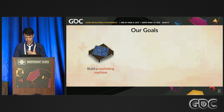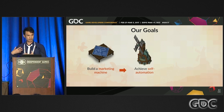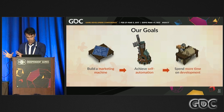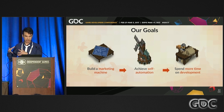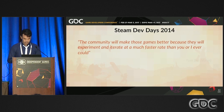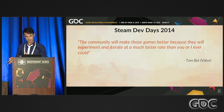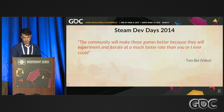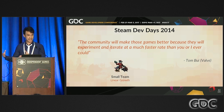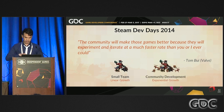Our goals when we started making Tooth and Tail were to build a marketing machine and achieve self-automation — to get to the point where we could just focus on game development because other aspects are handled by the community. This was inspired by a talk at Steam Dev Days 2014 where Tom Bowie at Valve said the community will make games better because they can experiment and iterate at a much faster rate than you and I ever could.